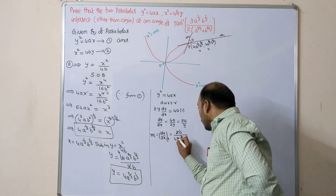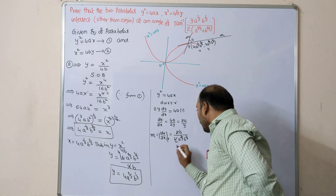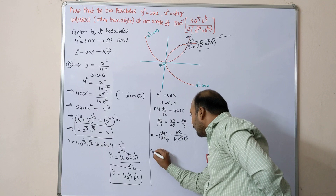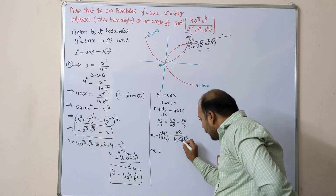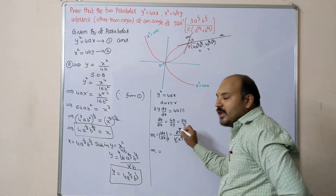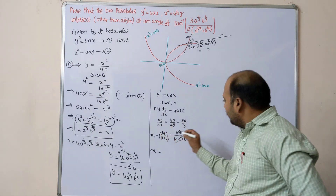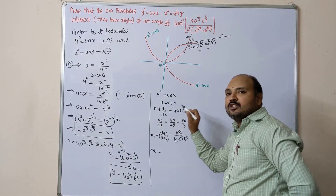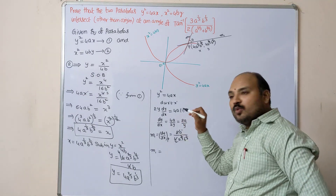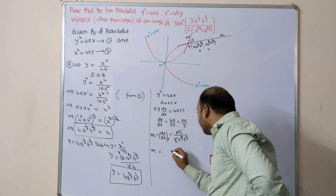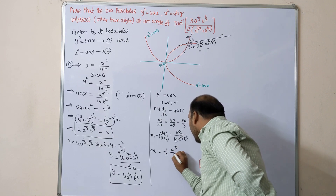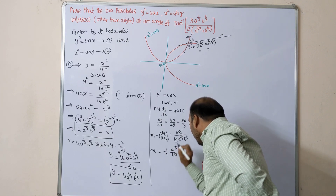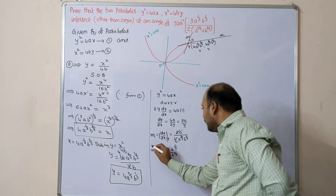Simplifying m1: 2a divided by 4a^(2/3)·b^(1/3) gives m1 = (1/2)·a^(1 − 2/3)·b^(−1/3) = (1/2)·a^(1/3)/b^(1/3). So m1 = a^(1/3) / (2b^(1/3)).